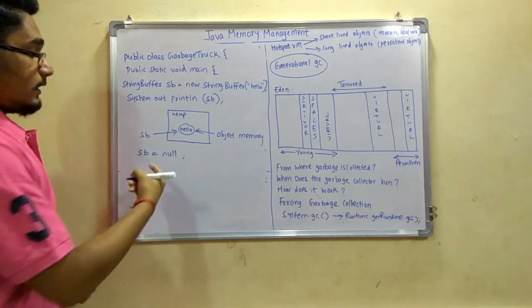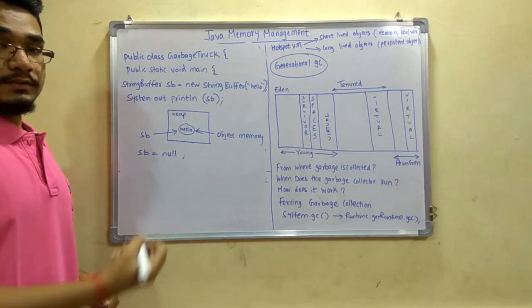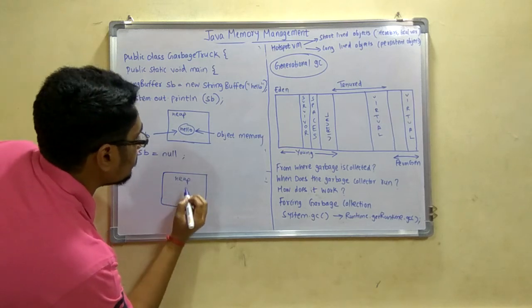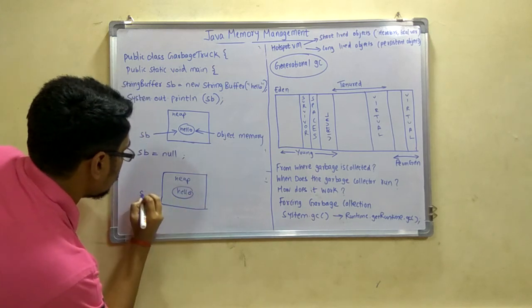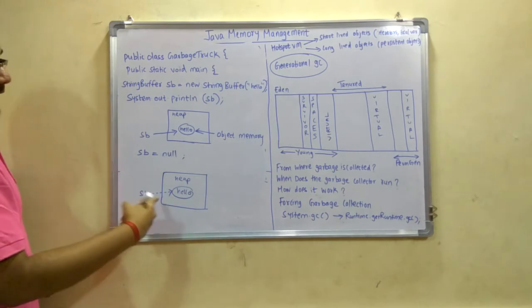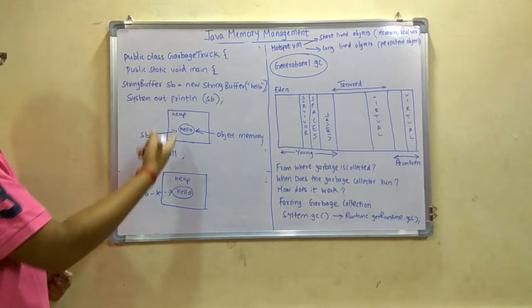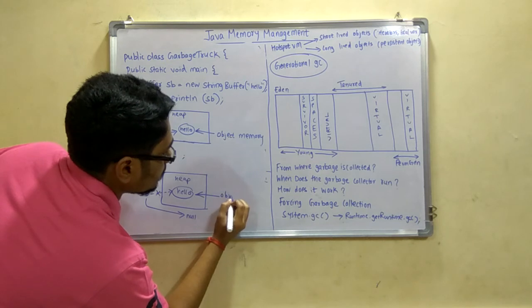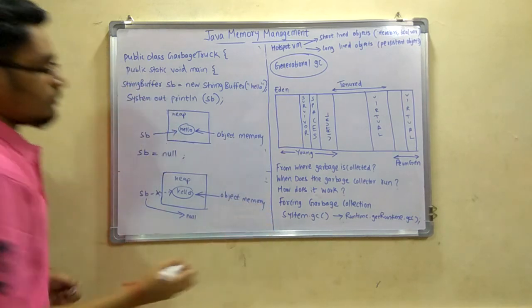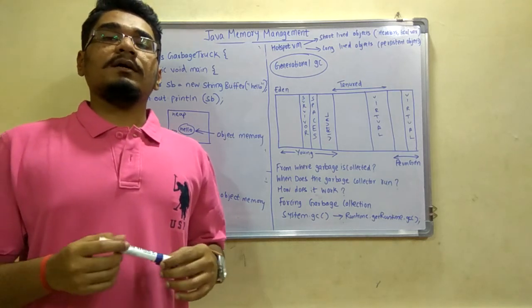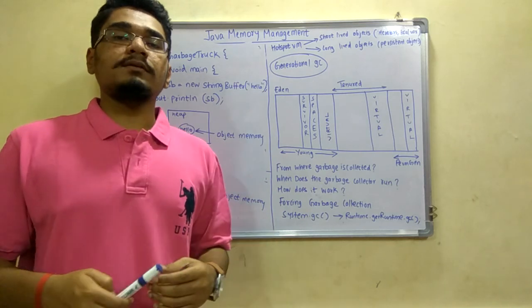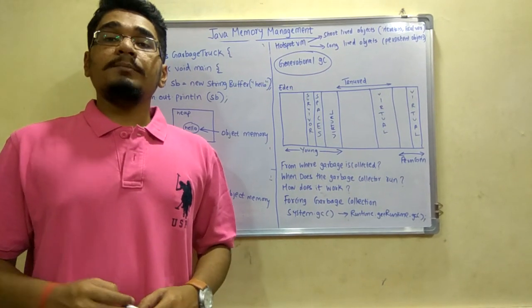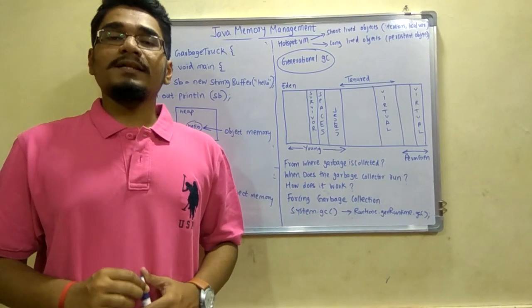Now we assign sb = null, meaning we are no longer referring to this sb inside the heap memory. The link which was there earlier has been broken and it is now referenced to null. This is how GC happens — whenever an object is not required or is unreferenced, the garbage collector reclaims that memory. This is the Java memory management tutorial in detail. Hope you enjoyed this video. If you found it helpful, please give a thumbs up and subscribe to the channel. Thanks for watching!